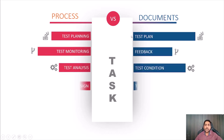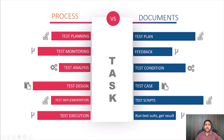To summarize the test activities and their associated documents: during planning we have the test plan; during monitoring we have feedback reports; during analysis we have test conditions; during test design we have high-level test cases; during test implementation we have test scripts or low-level test cases; during test execution we run all test cases and collect results. Please pause the video and remember these terms and their associated documents — it is important.